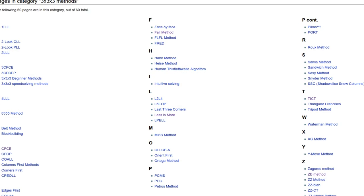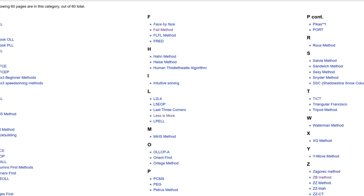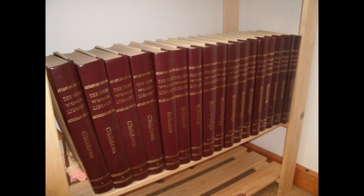The amount of methods that people have devised to solve the Rubik's Cube is large enough to fill several encyclopedia volumes, but people tend to cluster around just three: CFOP, RU, and ZZ.